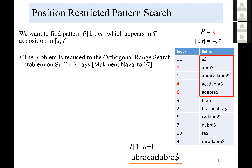We consider the position-restricted pattern search problem: find all occurrences of pattern p in text t at positions between s and t. For example, if p is 'a' and the position range is 4 to 9, then the answer is positions 8, 4, and 6 — there are five total occurrences of p, but only three appear in positions 4 to 9. This problem reduces to orthogonal range search on the suffix array.